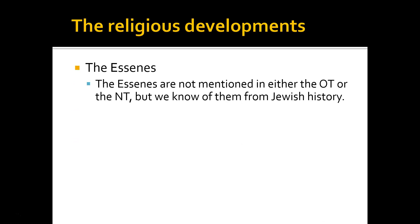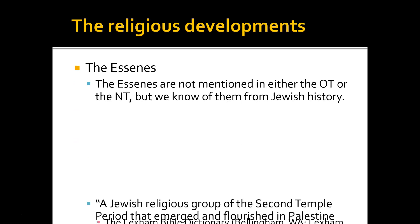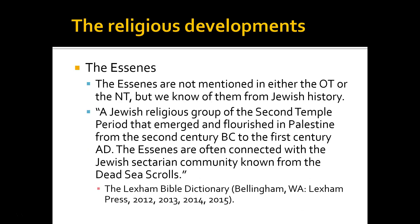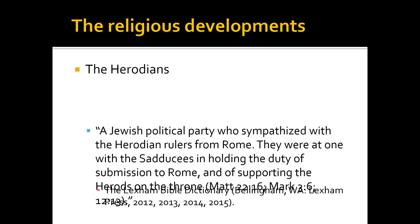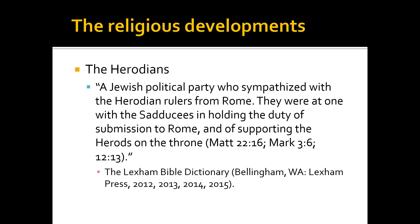The Essenes are not mentioned in either the Old Testament or the New Testament, but we know of them from Jewish history. They are a Jewish religious group of the Second Temple period that emerged and flourished in Palestine from the 2nd century BC to the 1st century AD. The Essenes are often connected with the Jewish sectarian community known from the Dead Sea Scrolls — they would have gathered the Dead Sea Scrolls. Then there were the Herodians, obviously rising from the time of Herod the Great, who came to power in 37 BC. They were a Jewish political party who sympathized with the Herodian rulers from Rome, at one with the Sadducees in holding the duty of submission to Rome and supporting the Herods on the throne.